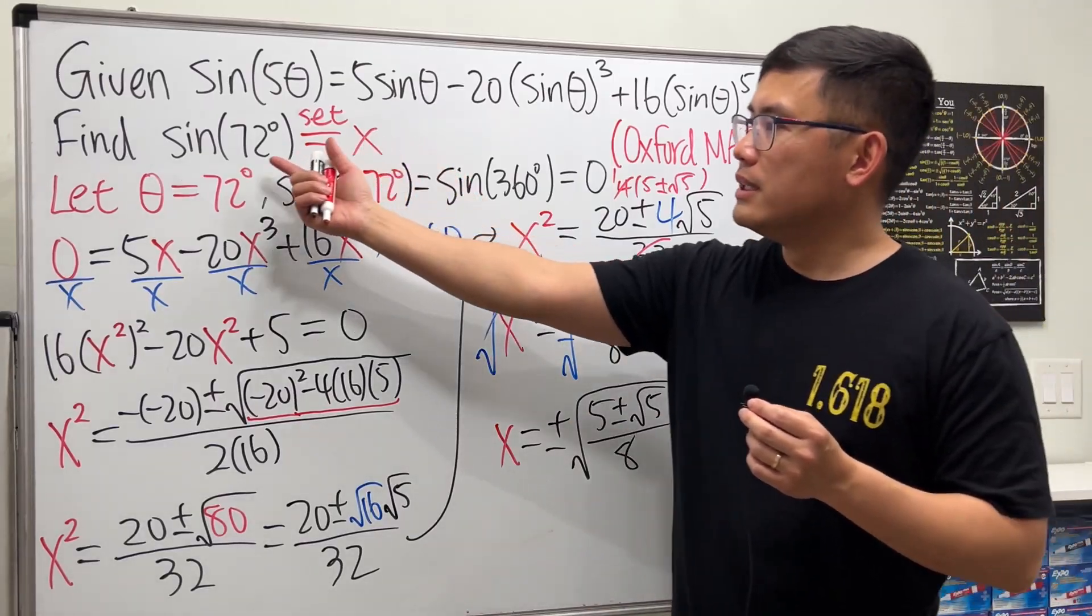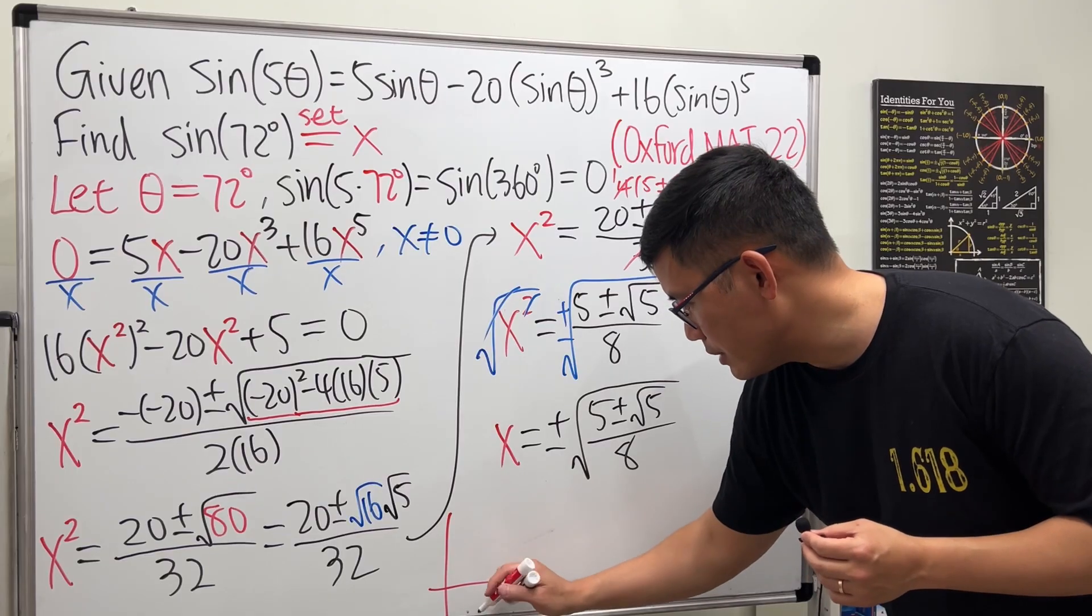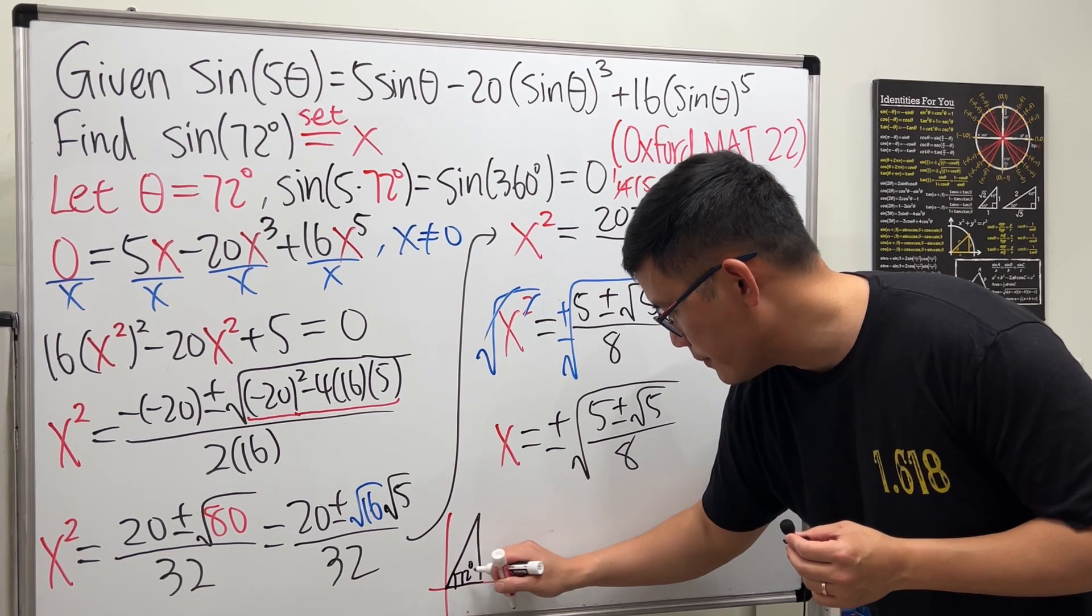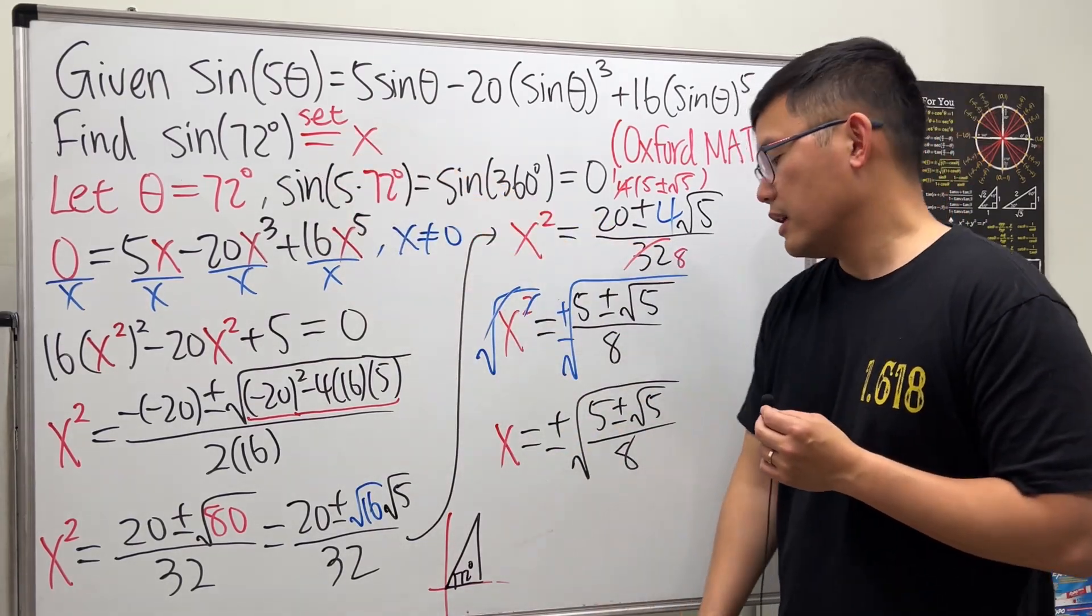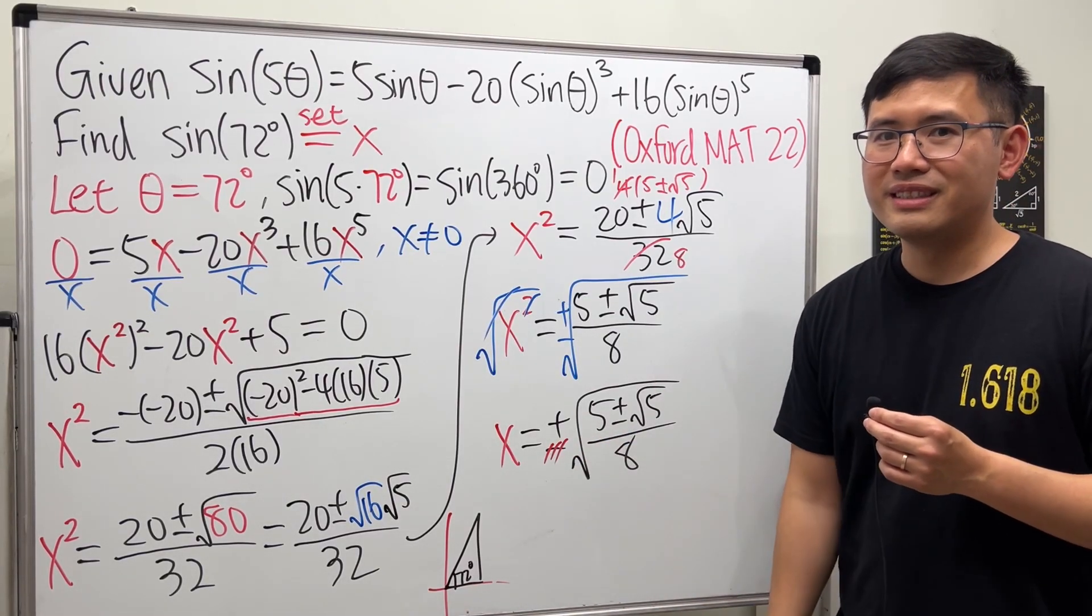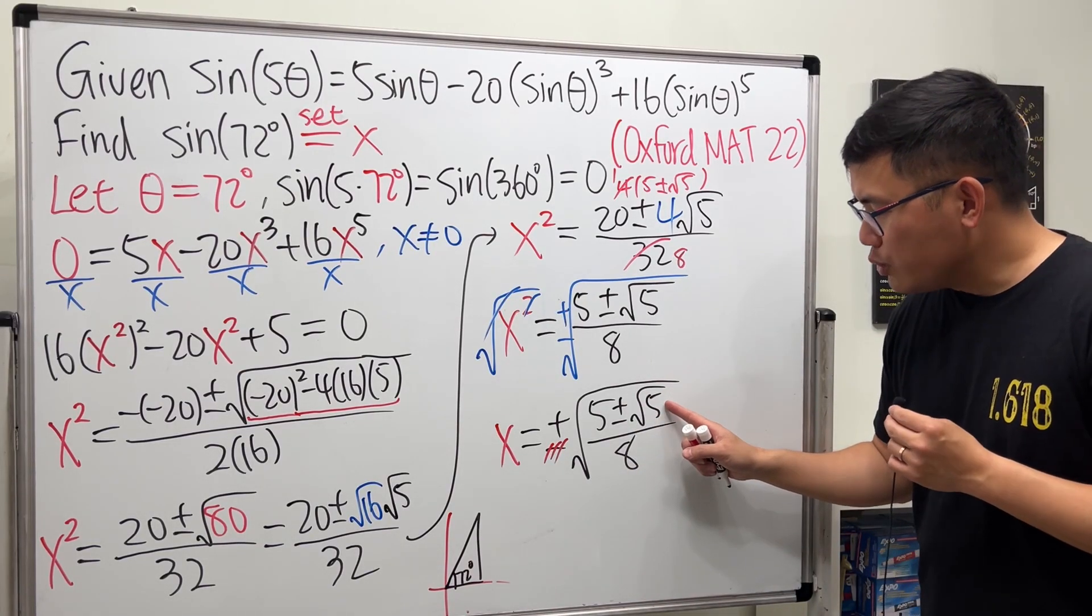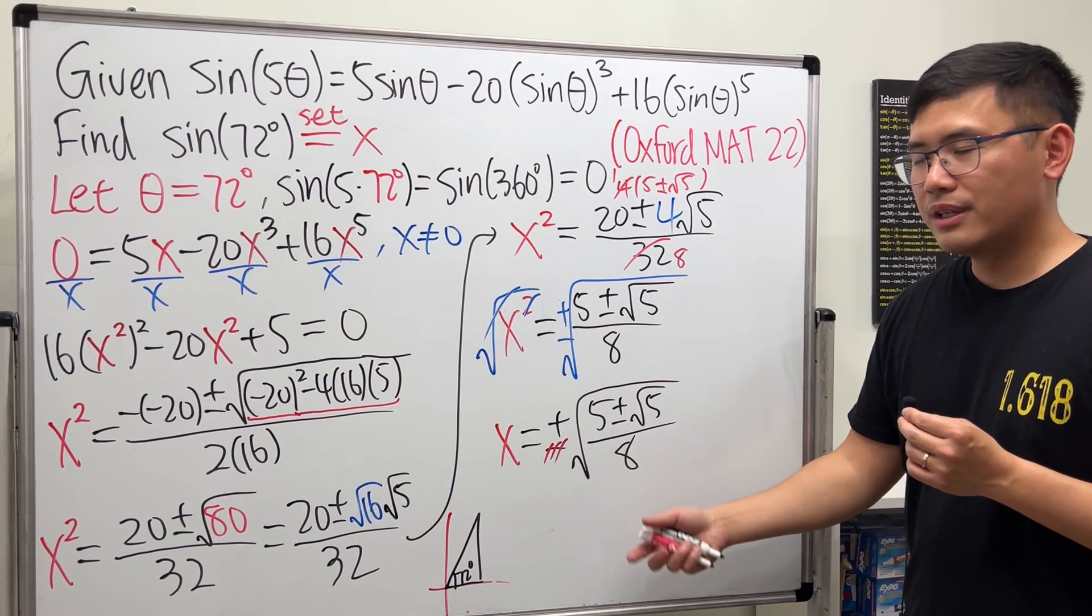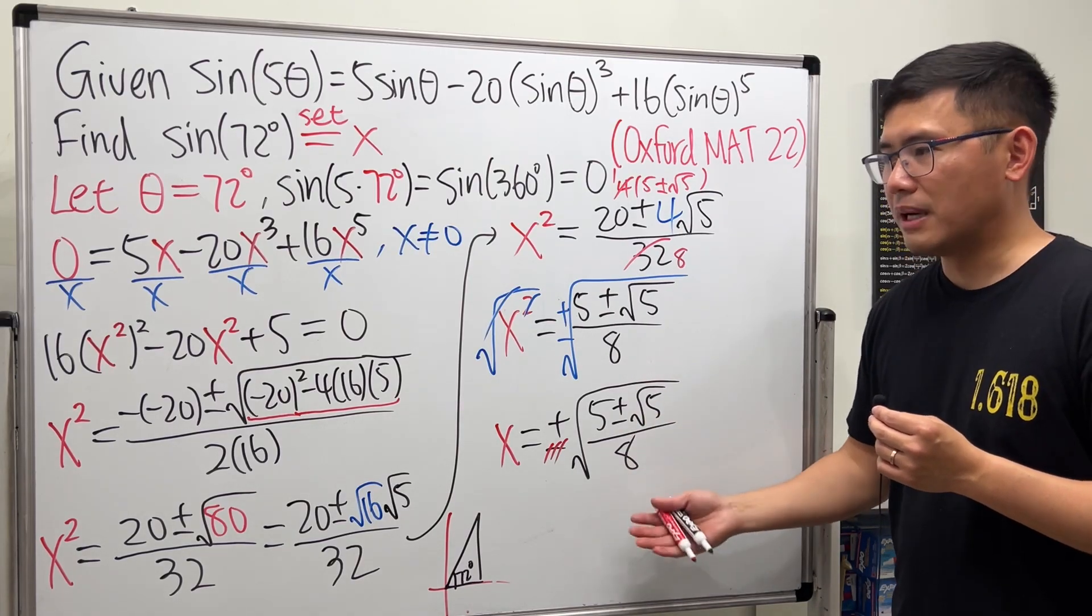Well, we know 72 degrees is in the first quadrant, so let me give you guys a picture real quick. So let's say it looks something like this: 72 degrees. So of course the y-value here is positive, that means sine value is going to be positive. That means this right here cannot be negative, so we can get rid of that. Good. But if you look at the inside, because √5 is less than 5, when you do the plus you get a positive result, and when you do 5 minus √5 and divide it by a square root, that's still a positive result.